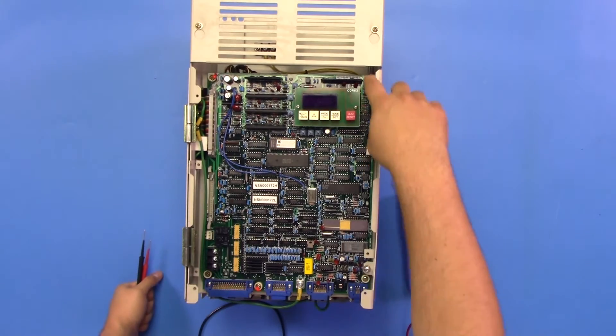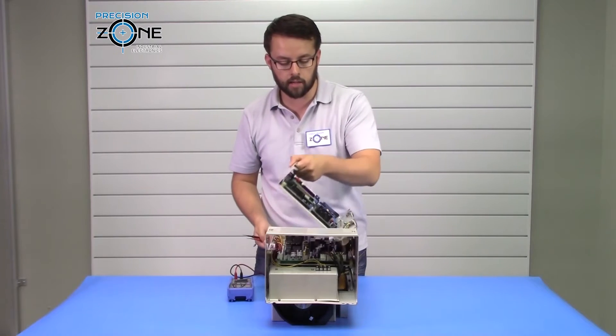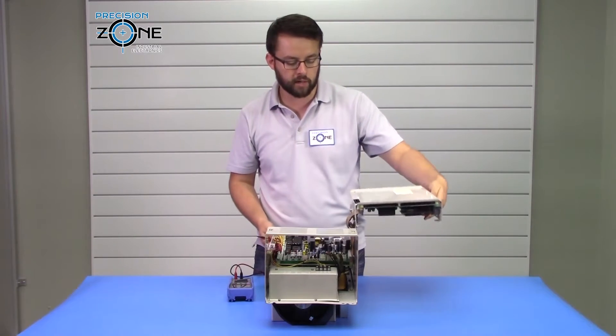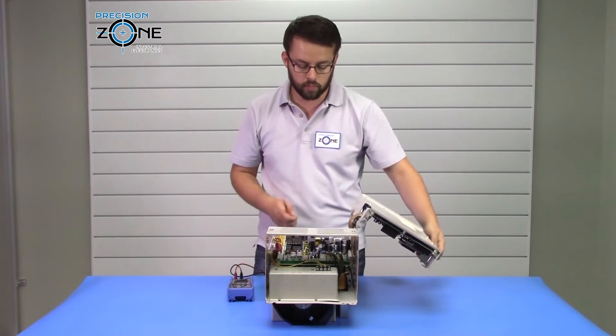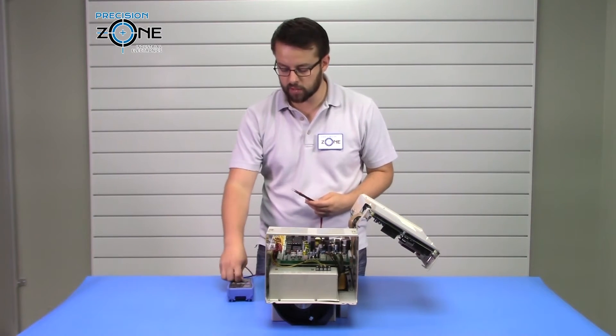To begin, you want to remove these two screws. Just undo them and they'll become loose. You can then lift this cover up and carefully place it to the side of the drive. You want to verify that the DC bus has been discharged.